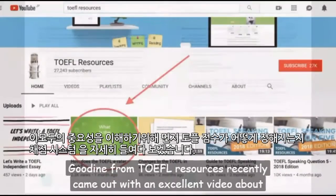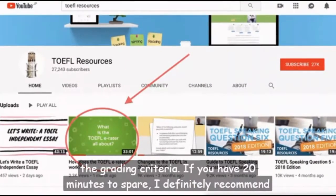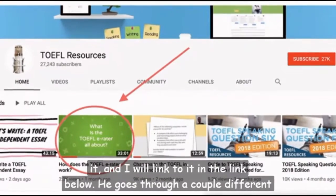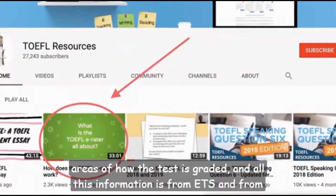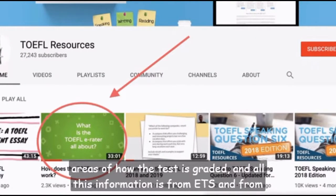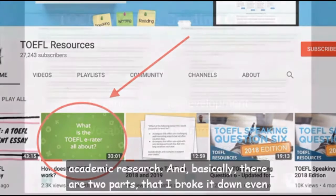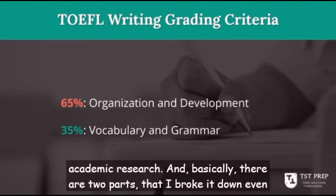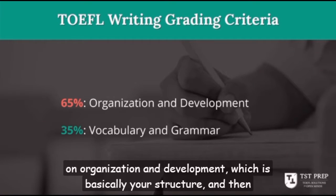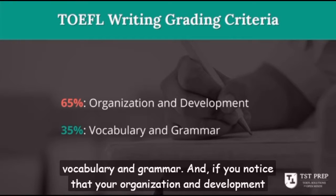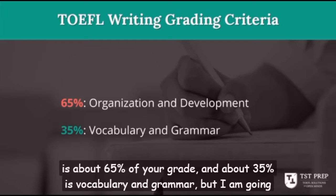Michael Gooden from TOEFL Resources recently came out with an excellent video about the grading criteria — if you have 20 minutes to spare, I definitely recommend it and will link to it below. He goes through different areas of how the test is graded, and all this information is from ETS and academic research. Basically, there are two parts: organization and development — which is basically your structure — and vocabulary and grammar. Organization and development is about 65% of your grade, and about 35% is vocabulary and grammar.